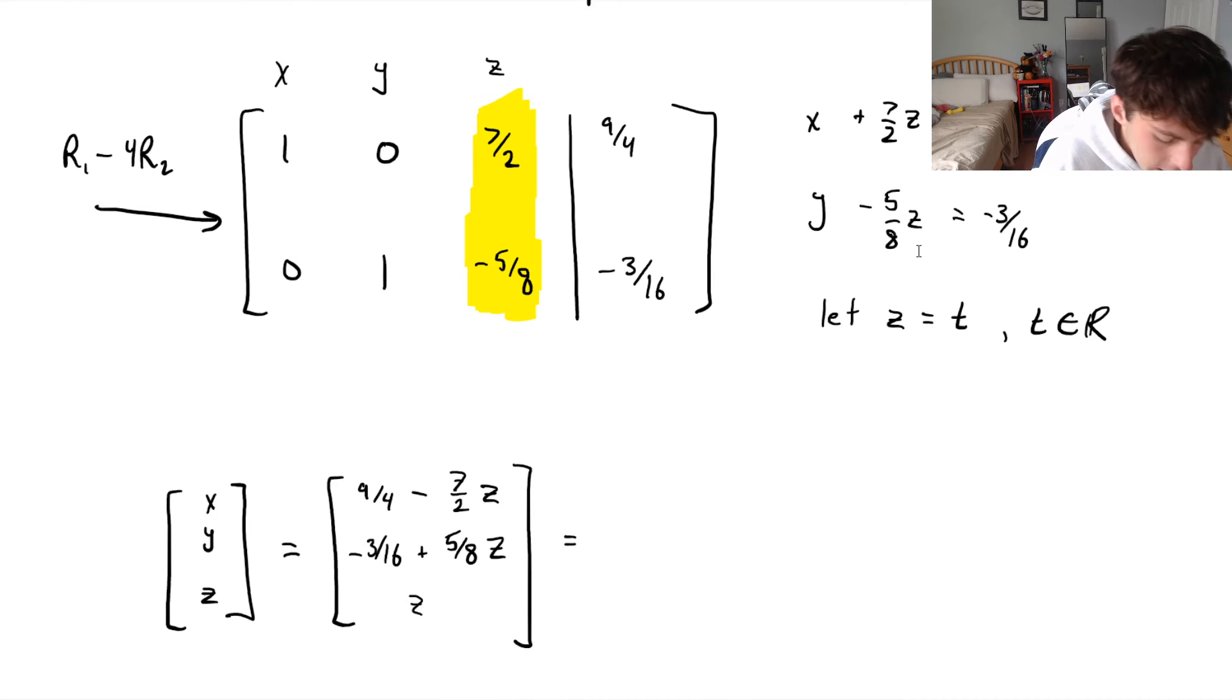And now, you can see here, we can actually break this up. So we've got this first vector here could be 9 fourths minus 3 over 16, 0, plus, and let's change this to a t now. Well, from our first equation, we would get minus 7 over 2, we would get 5 eighths, and then in our last one, well, remember, there's this little 1z here. It would be the same as 0 plus 1z. So 0 plus 1t, or 1z. So we're going to have a 1 here.